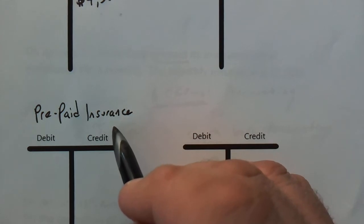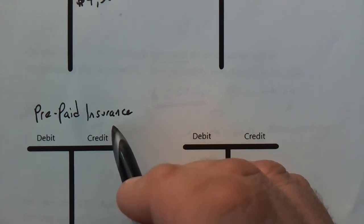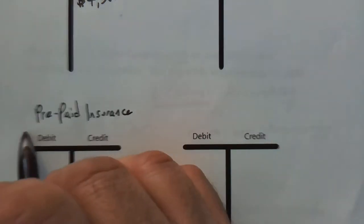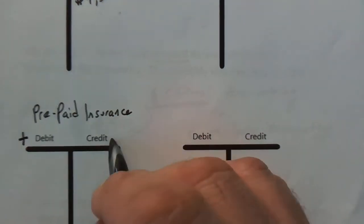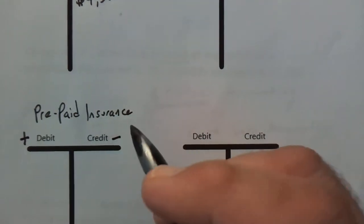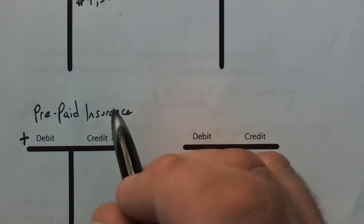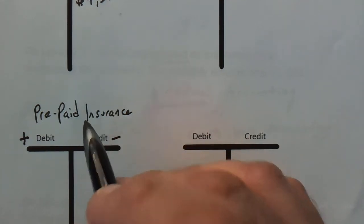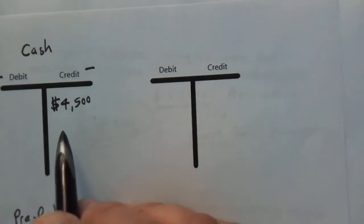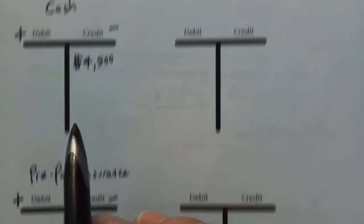So just like cash, it is an asset. And because it is an asset, it goes up with debits and down with credits. We have increased our prepaid insurance by an amount of $4,500.